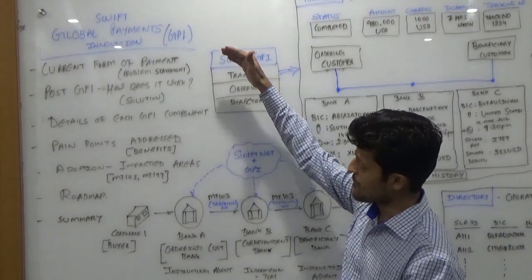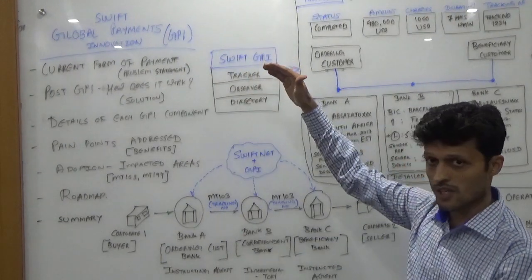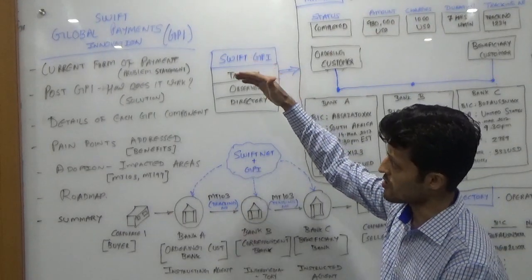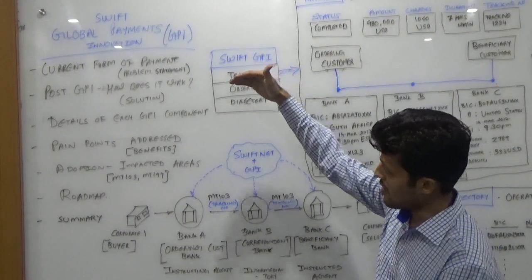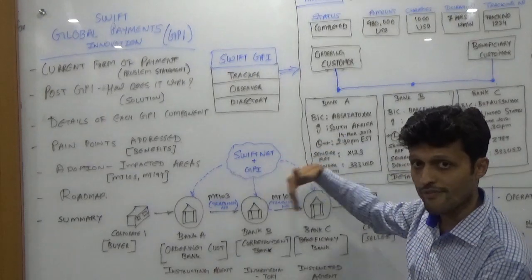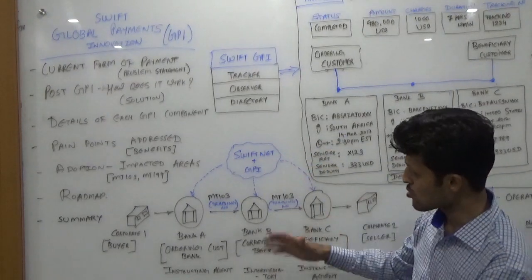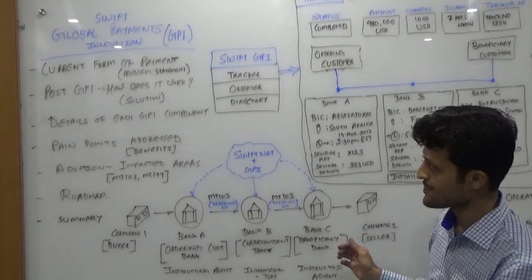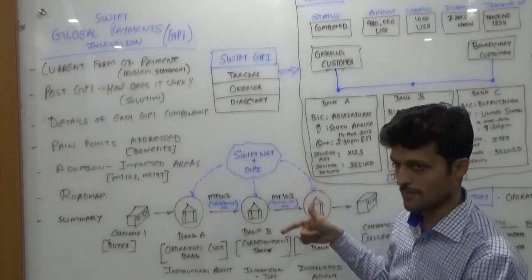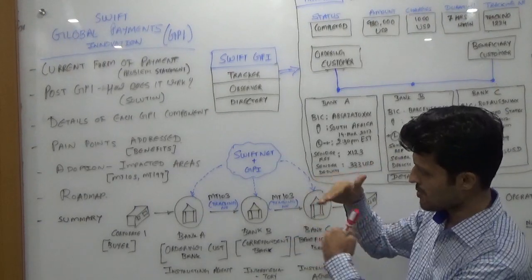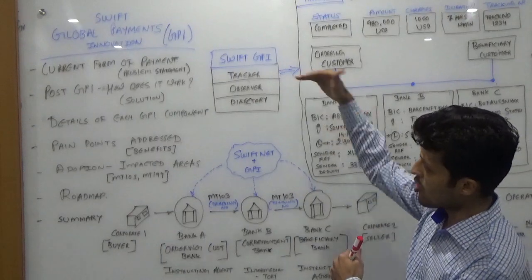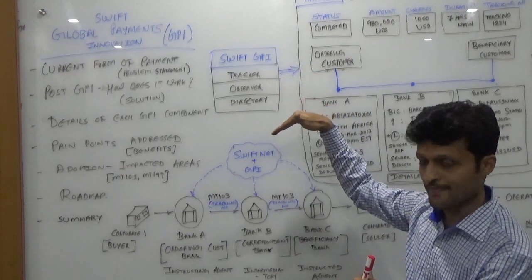What is the GPI technology? Swift has come up with Global Payments Innovation, that is the GPI technology. Post implementing GPI, how things will differ and how those challenges are being addressed. Then we will talk about each component of GPI, because GPI comes with a bundle of packages, and we will talk in depth about each of them.